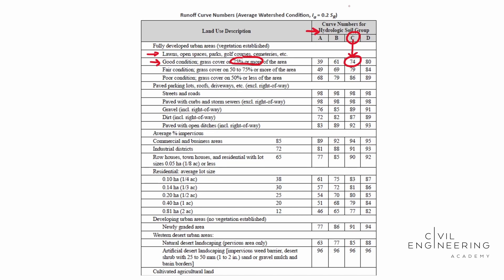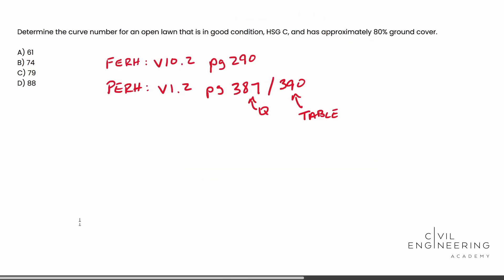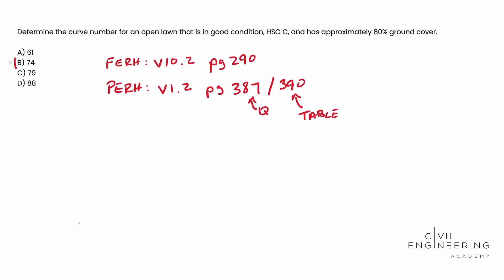Just to break that down again: open lawn told us fully developed urban area, open space. That was the hint. The other categories — paved parking lots, commercial, townhouses, developing urban areas — were not applicable. If you're taking the PE, there are several other sheets to check as well. So: open lawn, good condition, HSG C, approximately 80% ground cover gives us a curve number of 74. That's answer choice B. Hope this video helps and clears some things up — we'll catch you next time.